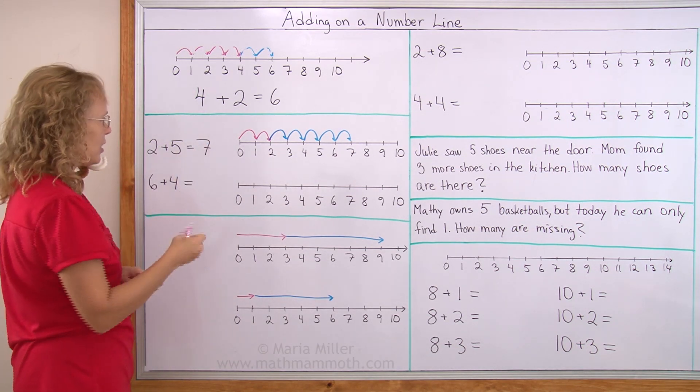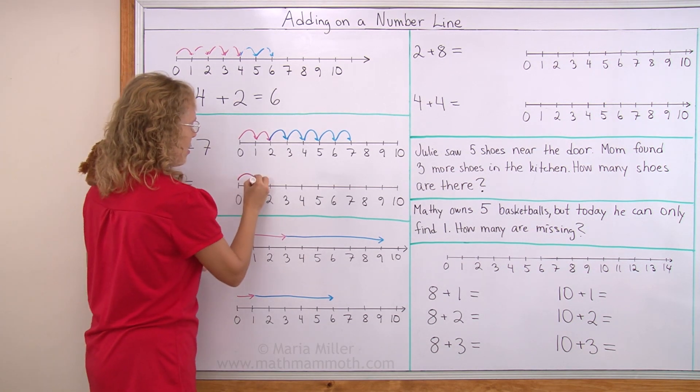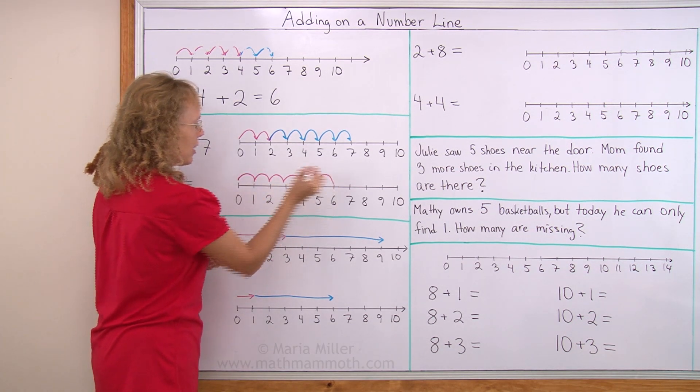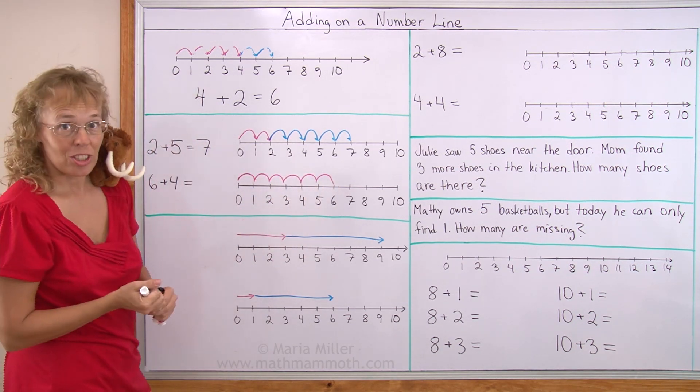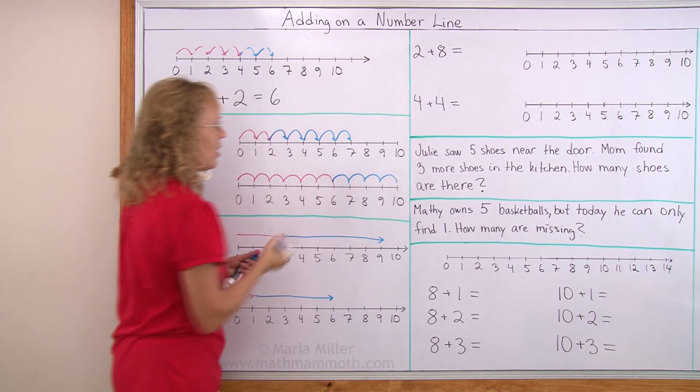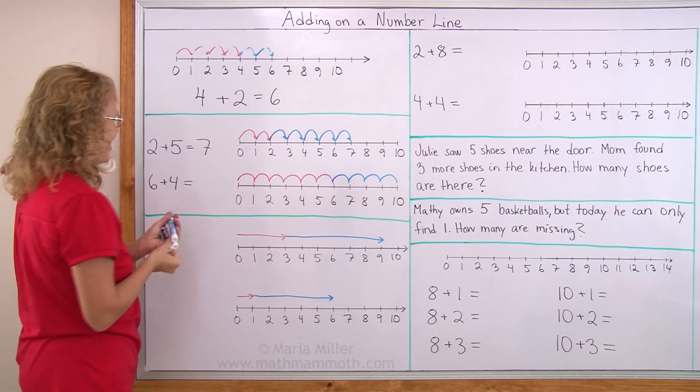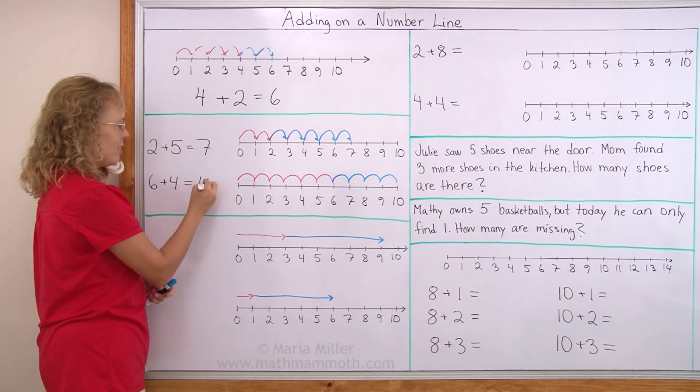Again, first 6 jumps. 1, 2, 3, 4, 5, 6. And then 4 jumps more. 1, 2, 3, 4. And we are at 10. 6 plus 4 equals 10.